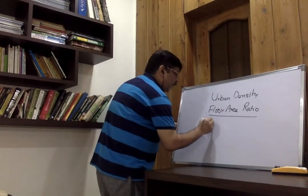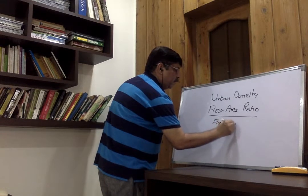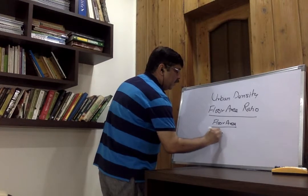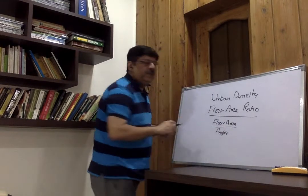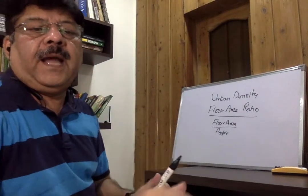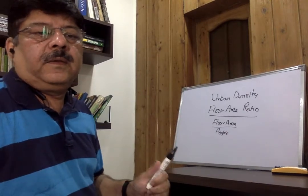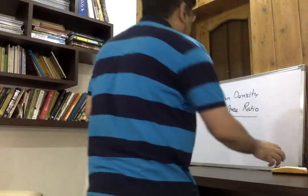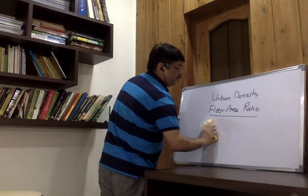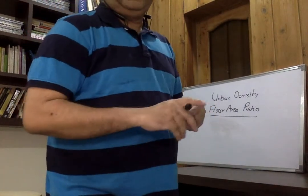Floor area ratio: we divide the floor area — the covered area, as builders call it — by the land area. It is the ratio of floor area or covered area to the land area.